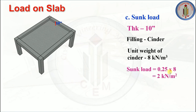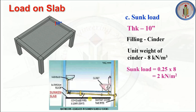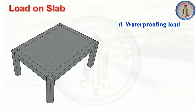The filling material used is cinder, with a unit weight of 8 kN/m³. Sunk load = 10 inches thickness × unit weight = 2 kN/m². So apart from the self weight and floor finish, this type of sunk slab carries an additional 2 kN/m² as sunk load. From the image, you can clearly see the sunk slab is 10 inches below floor level, used for pipelines, and filled with cinder.